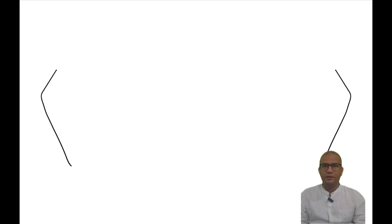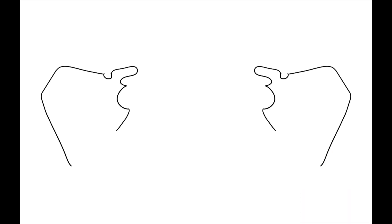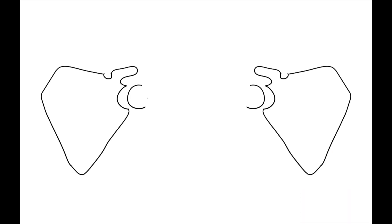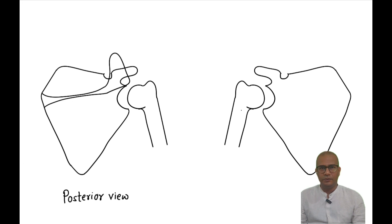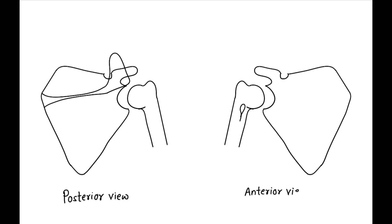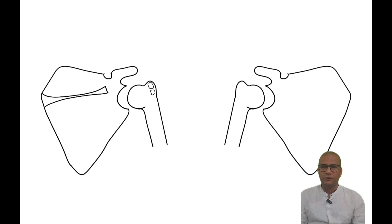To draw this, we need an anterior view and a posterior view of the scapula and humerus. The posterior view is shown in the diagram by drawing the spine of the scapula, and the anterior view is shown by drawing the lesser tubercle of the humerus. In the posterior view, we will next show the greater tubercle and its three impressions: upper, middle, and lower.